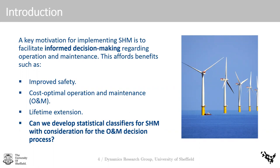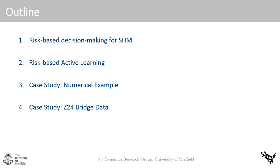Given that we want SHM to help us with decision making, we'd like to answer the question: can we develop statistical classifiers for SHM with consideration for the operation and maintenance decision processes they're being used to inform? The rest of the talk will cover a method for representing SHM decisions as influence diagrams, how these decision processes can be incorporated into machine learning algorithms, and finally a demonstration of the risk-based active learning algorithm on a couple of case studies.